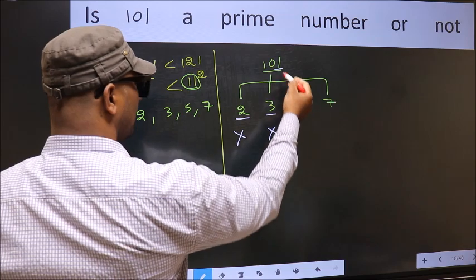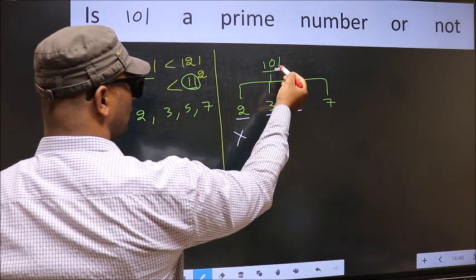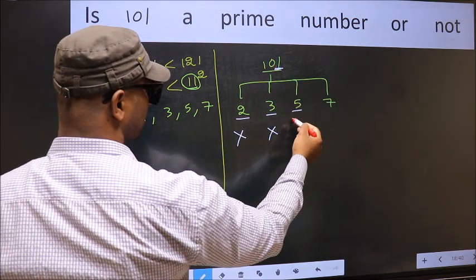Next, number 5. Last digit is neither 0 nor 5. So this is not divisible by 5.